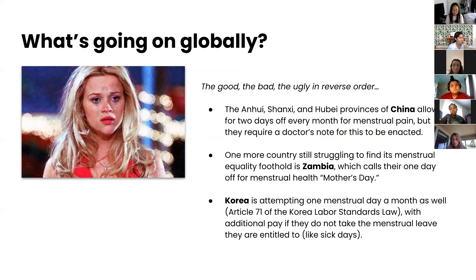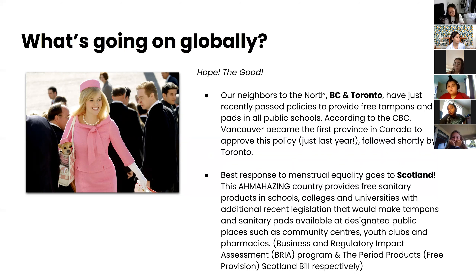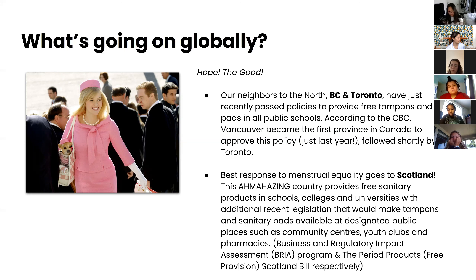Some countries are doing a pretty good job. Vancouver and Toronto have recently passed policies to provide free tampons and pads in all public schools. According to the CBC, Vancouver became the first province in Canada ever to approve this kind of legislation, followed shortly by Toronto. The best response to menstrual equality goes to Scotland, which provides free sanitary products in schools, colleges, and universities, and in 2020 passed legislation making tampons and pads available at designated public areas.